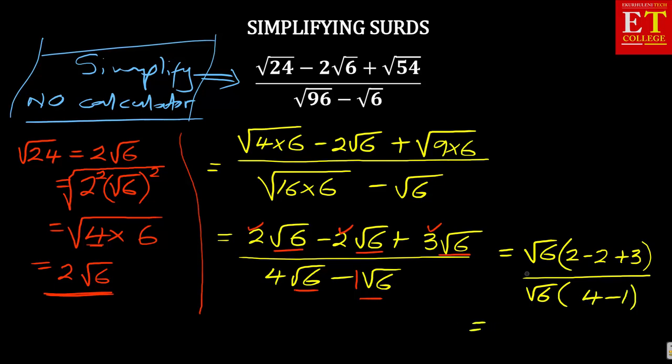So now the final answer there, 2 minus 2, it's a 0. The square root of 6 will also cancel the square root of 6 so that you have got now on top 3 over 4 minus 1 is 3. So you have got 3 over 3 and the answer is equal to 1. So you can see that if you simplify these surds, it's giving you an answer of 1.